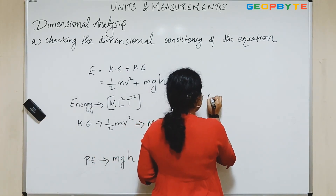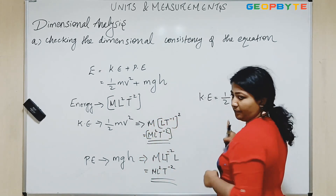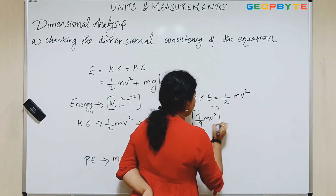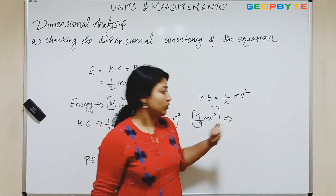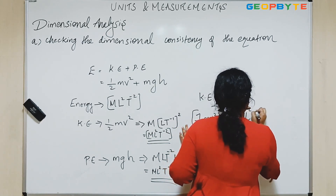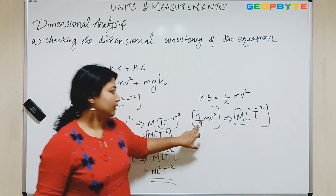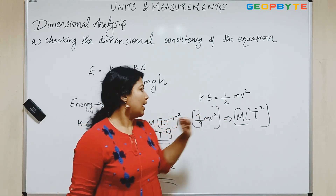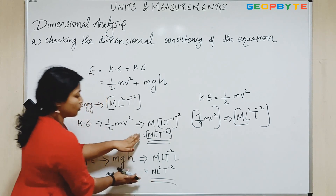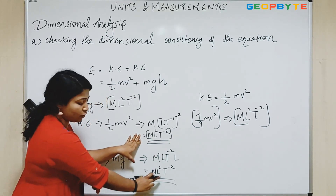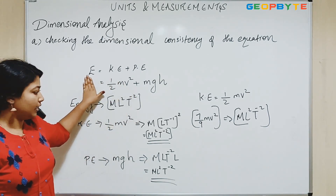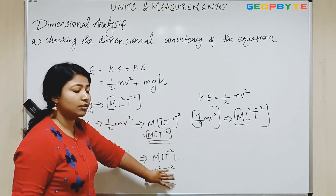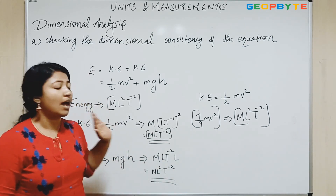If I am asking you to find the dimensional equation of, say, 7/9 M V squared, this will also give you M L squared T to the power minus 2. But this equation is not valid because the constant is not 7 by 9, it is 1 by 2. Also, dimensional analysis doesn't work like physically adding — you can't add two M L squared T to the power minus 2 terms separately. It should only be combined in the case of multiplication or division, not in the case of addition or subtraction. So these things you have to keep in mind.